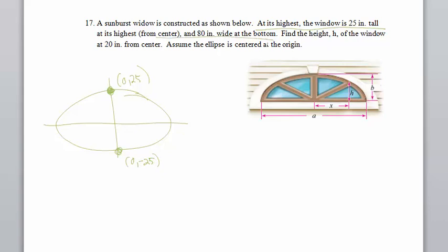From the center, it's 80 inches wide at the bottom. So that means the distance from here to here is 80, which makes the point half of that, right? 40, 0 and negative 40, 0. Negative 40, 0.